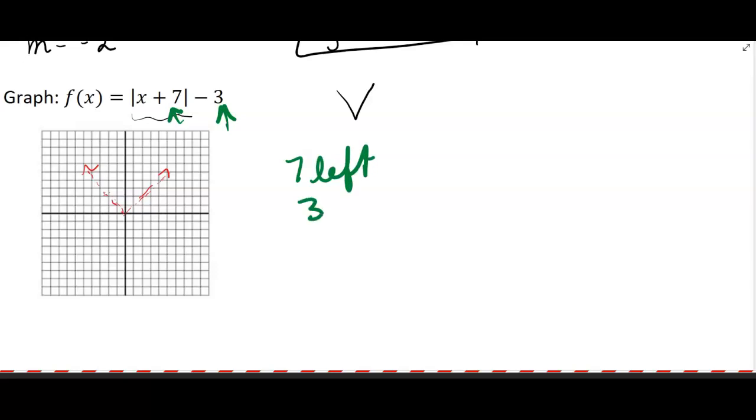Take your vertex here, at that bottom point, and go 7 left and 3 down, and then make your graph from there. So you're going to have the V going up this way and going up this way. We're kind of out of room; you could have a bigger piece of graph paper, but that would be the graph, using our transformations to do that.